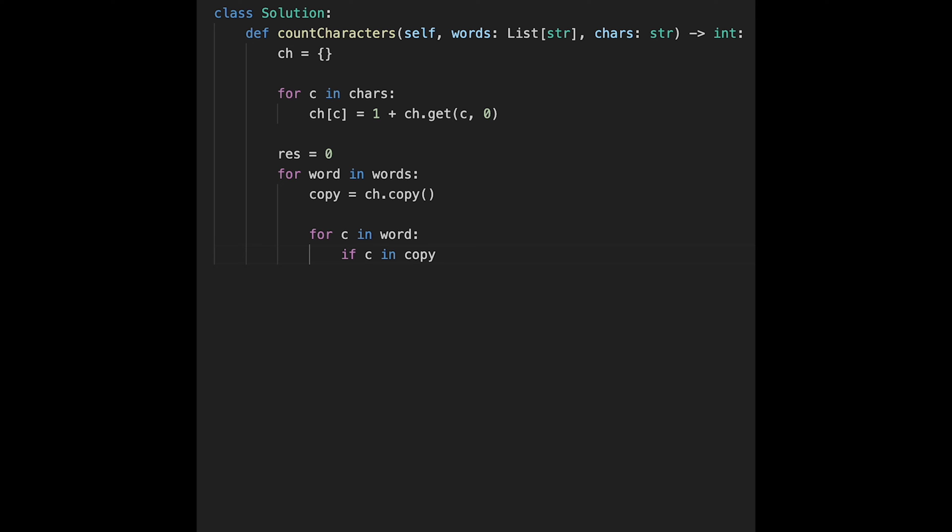And if c in copy and copy[c] is not 0, in that case I'll count down the value with minus 1. So copy[c] minus equals 1.